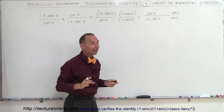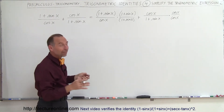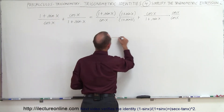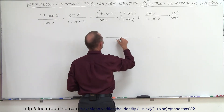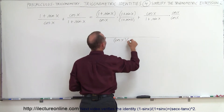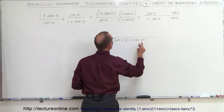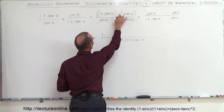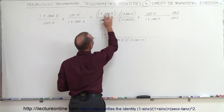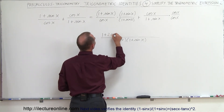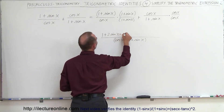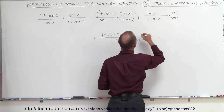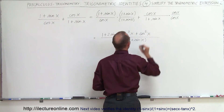Now when you look at that, you realize that both fractions have the same denominator, so we can write everything over the common denominator cos x · (1 + sin x). In the numerator, multiplying out gives us 1 + 2sin x + sin²x, and then over here we have cos x · cos x, which is plus cos²x.